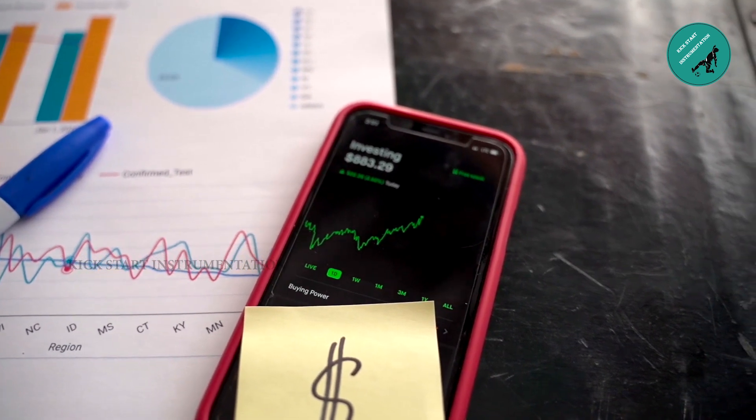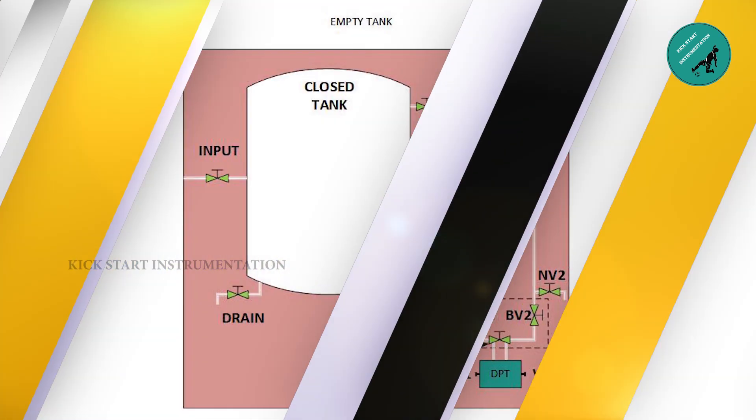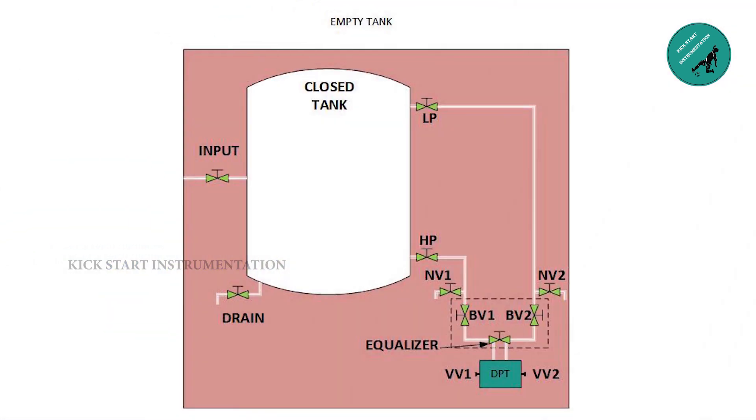Let's start. Let us consider that the tank is already installed and the differential pressure transmitter is also installed and connected with the tank using stainless steel tube. Let us see the abbreviation and its functions that I shown here.